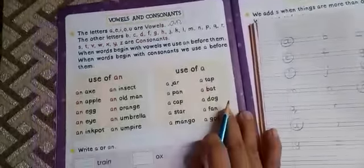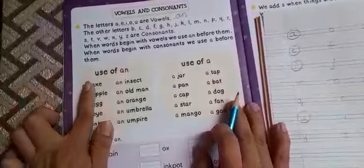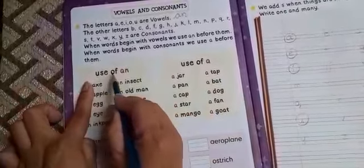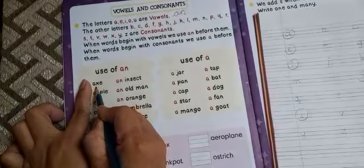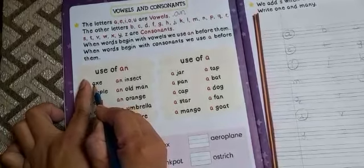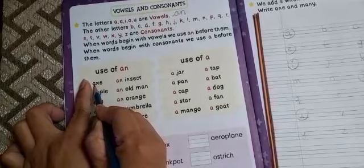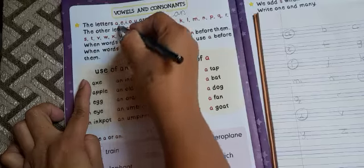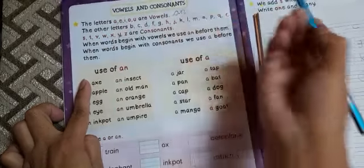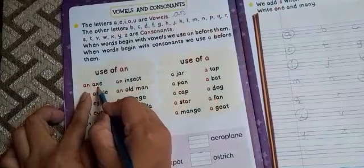Use of an. See the first word, ax. The first letter is A. A is in vowels? Yes. So we will use an. We will write an ax.